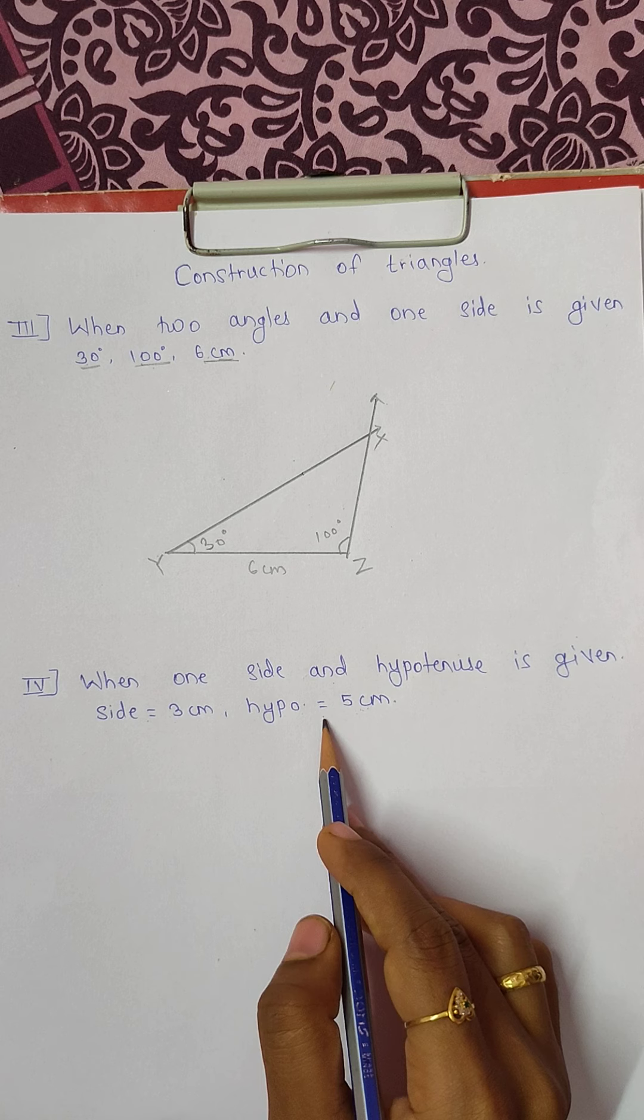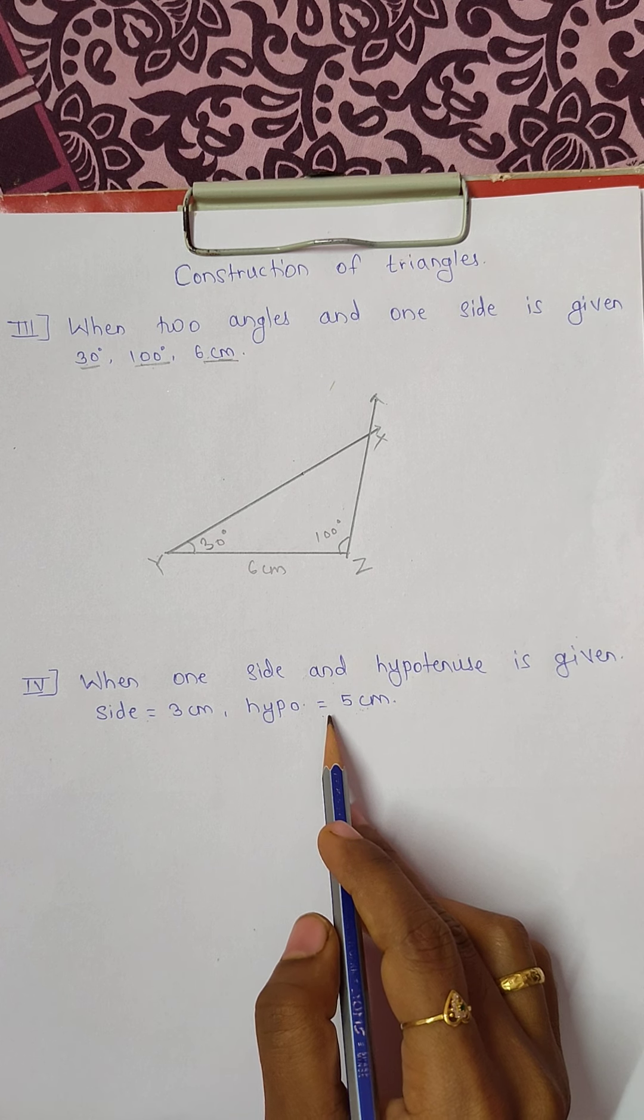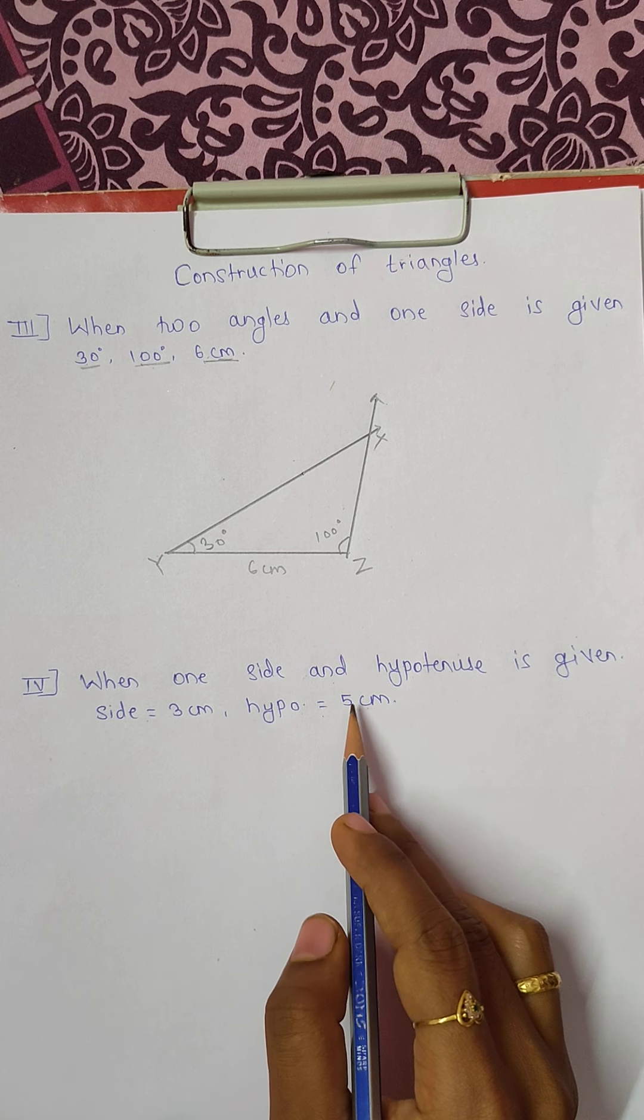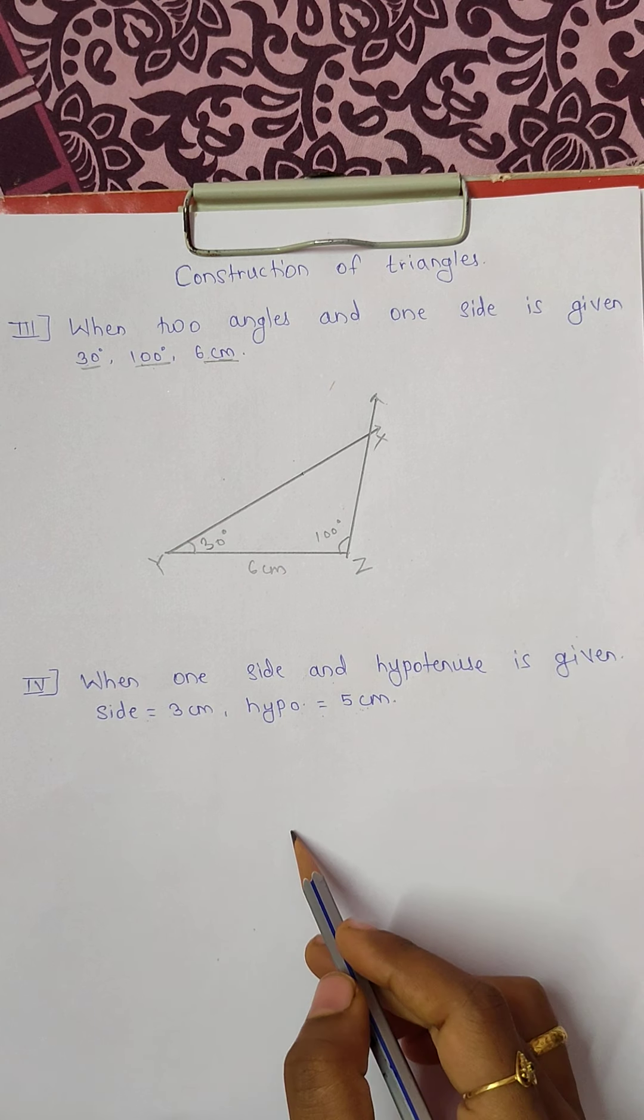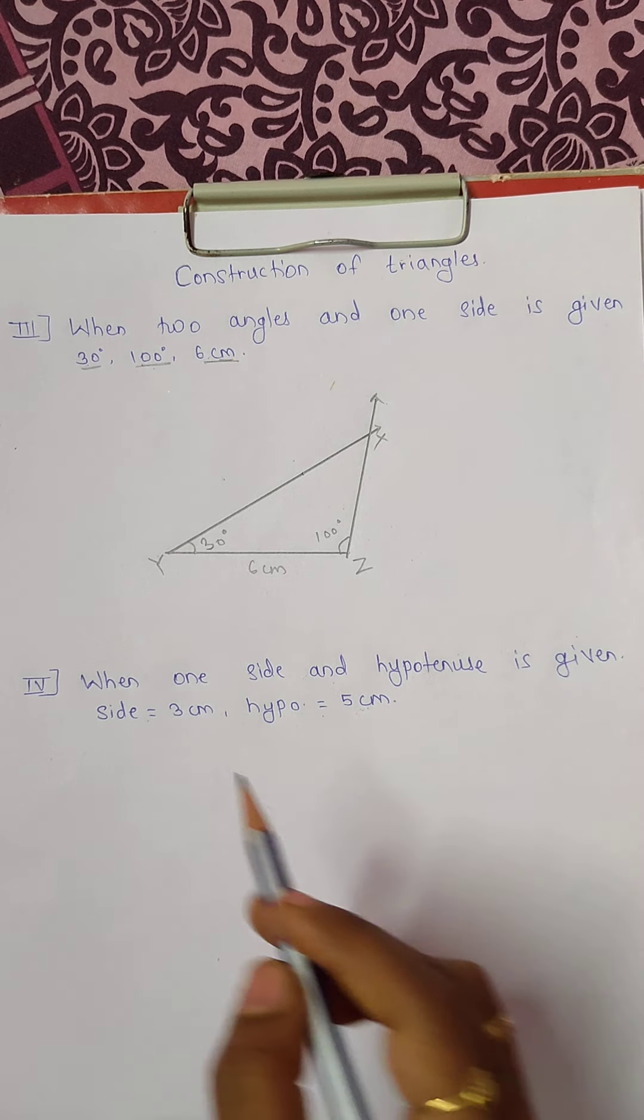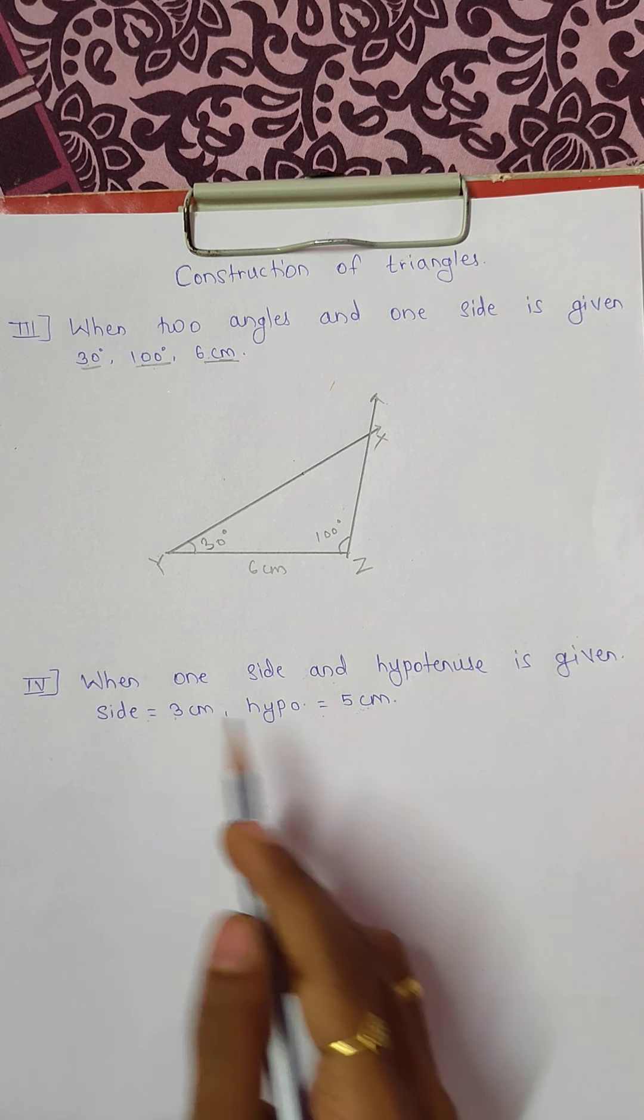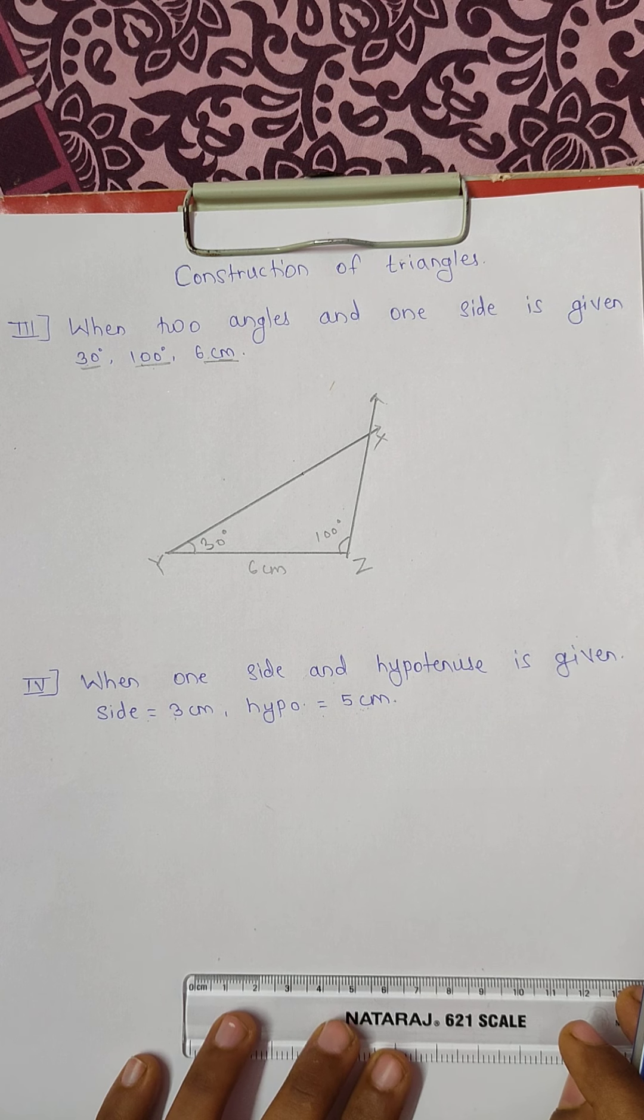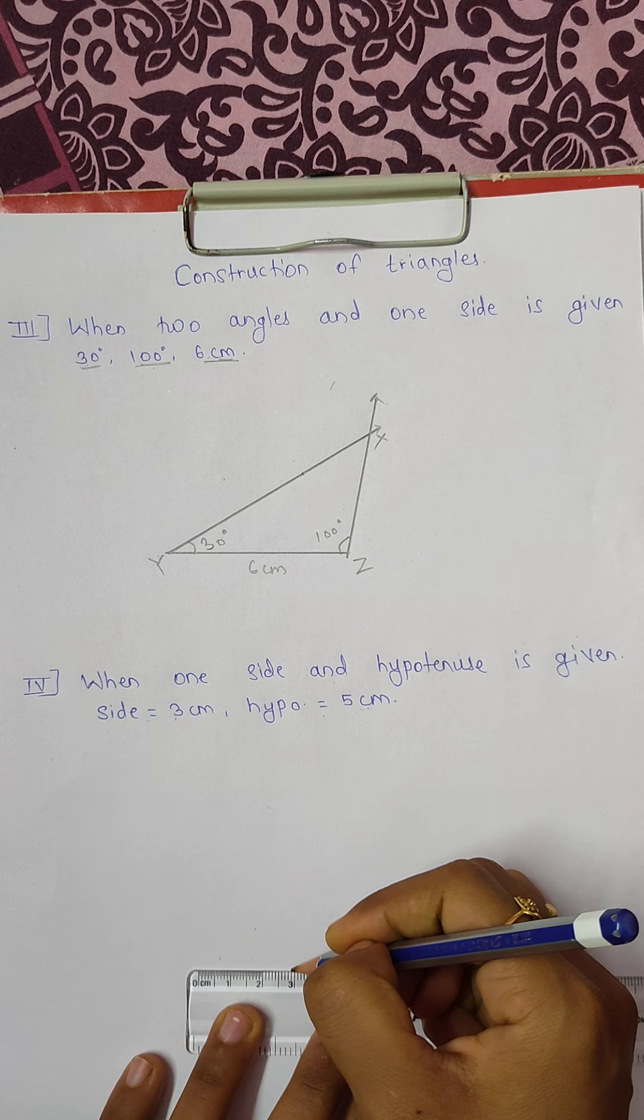As this has hypotenuse, so that means this is a right angled triangle. We cannot directly plot 5 centimeter line. So for that we have to draw a 3 centimeter line first. We will draw a 3 centimeter line.